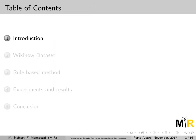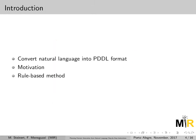I will start with a brief introduction. In this work we propose a method for converting natural language or text into symbolic representation, specifically PDDL, to be used by off-the-shelf planners. Our motivation is to overcome the knowledge acquisition bottleneck of translating text into symbolic representation, which is time-consuming and usually requires that users learn a formal language. So we propose automating this task using rule-based methods.